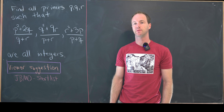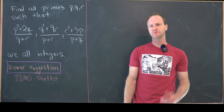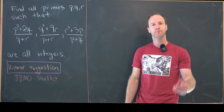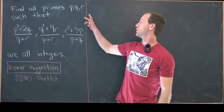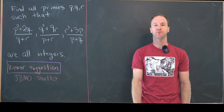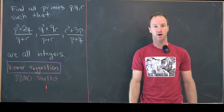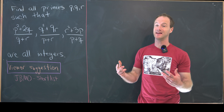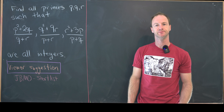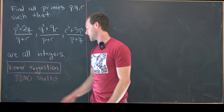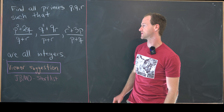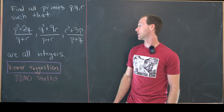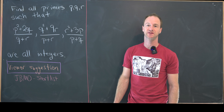Here I've got a nice viewer-suggested number theory problem, and this comes from the short list to the Junior Balkan Math Olympiad. We want to find all triples of prime numbers p, q, and r such that these three rational expressions are all integers: p squared plus 2q over q plus r; q squared plus 9r over p plus r; and r squared plus 3p over p plus q.